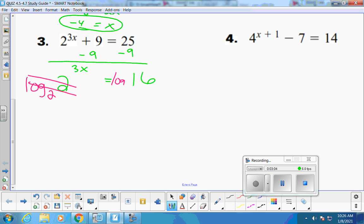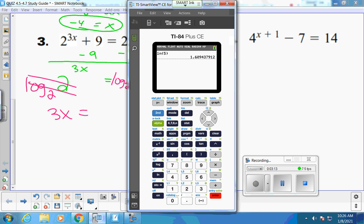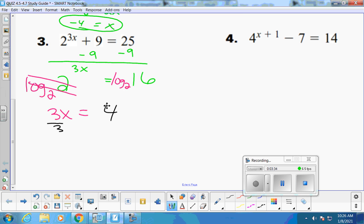So log base 2 of 16. Let's show the kids at home how to type in log base 2 of 16. So you can do math, alpha, math, and that can pull up your special log button. If you use the regular log button on the home screen, it's base 10. And we don't want base 10. We want base 2. So log base 2 of 16 equals 4. And then I divide both sides by 3 and get 4 thirds.